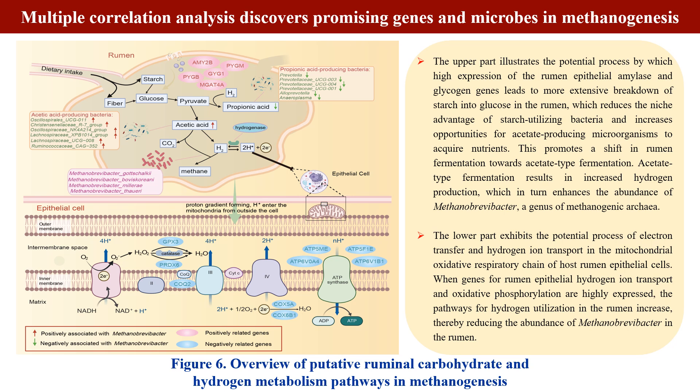In addition, other genes were positively correlated with propionic acid-producing bacteria and negatively correlated with methanogens. When these genes for rumen epithelial hydrogen ion transport and oxidative phosphorylation are highly expressed, the pathways for hydrogen utilization in the rumen increase, thereby reducing the abundance of Methanobrevibacter in the rumen.